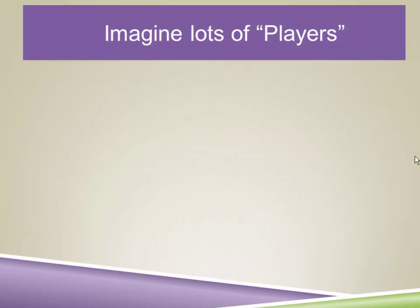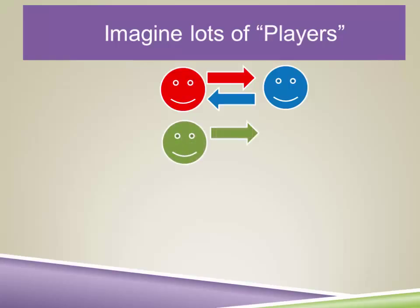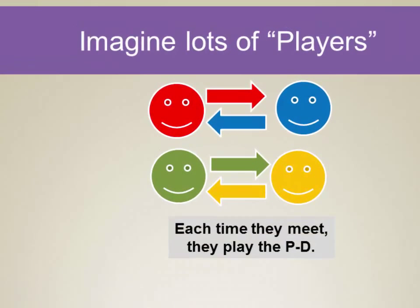But instead of just two players who play once, imagine that there are lots of players. We have a player we'll call red and a player we call blue, and they might run into each other, and when they do, they play an episode or a hand of the Prisoner's Dilemma. We also have the green player and the orange player, and we can imagine lots of players out there. Each time they meet, they play the Prisoner's Dilemma. And it turns out to be very important how likely it is that they'll meet again.